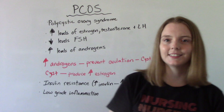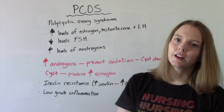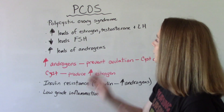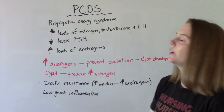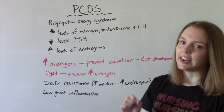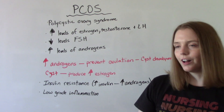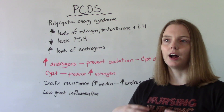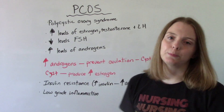What does PCOS stand for? It stands for Polycystic Ovary Syndrome. A lot of things are happening in the body to make this happen. The patient will have higher levels of things like estrogen, testosterone, and luteinizing hormone. They will also have decreased levels of FSH and increased levels of androgens, which are male hormones. Having a higher than average amount of those is the characteristic thing associated with PCOS.